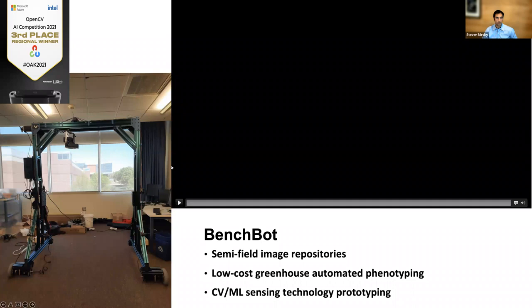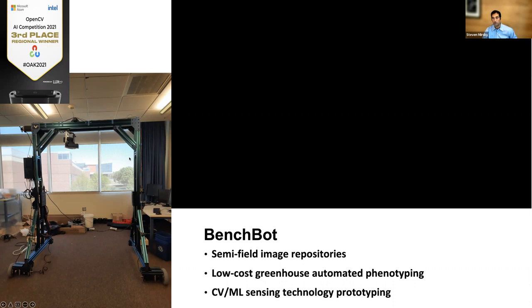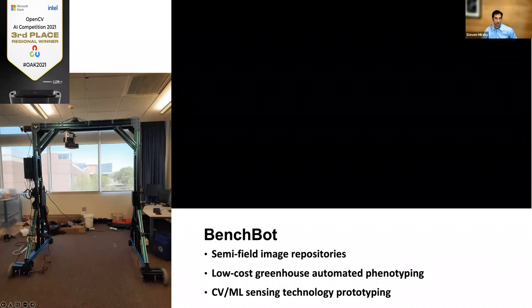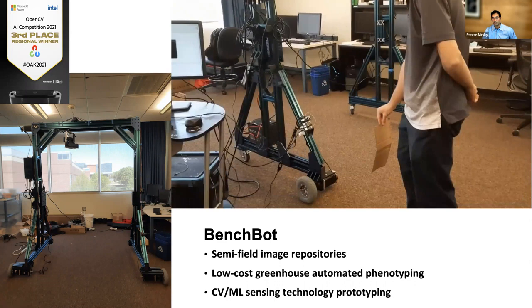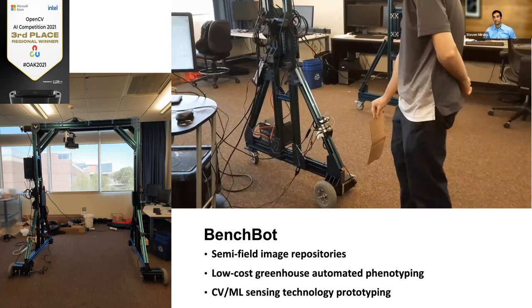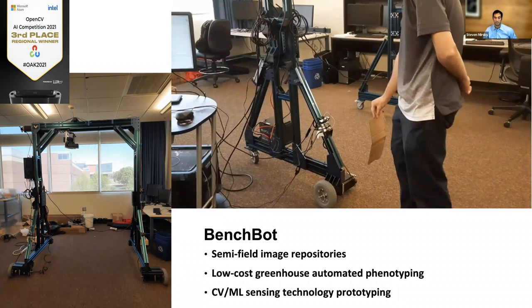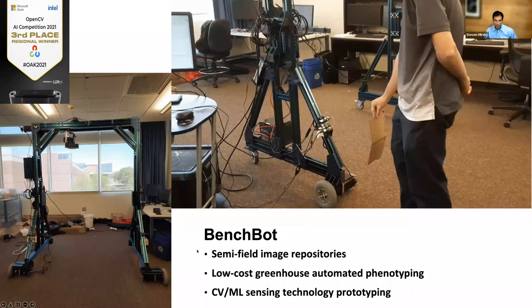We're proud of this bench bot product — it took third place in a North America open computer vision competition for innovation in developing image repositories. This hardware is being trained to be fully autonomous, going across a bench and continuously collecting images. The camera moves from side to side while tracking lengthwise along the bench. It's a potent tool for building image repositories and doing phenotyping, as well as testing and developing different camera technologies and applications that we can prototype on this autonomous robot.